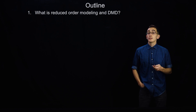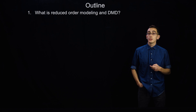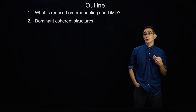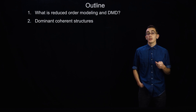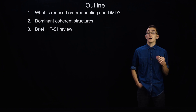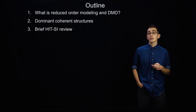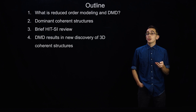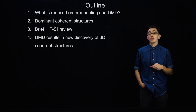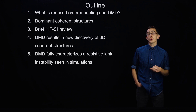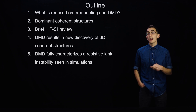Here's the outline. I'm going to discuss what reduced order modeling is and what the Dynamic Mode Decomposition is — we're going to abbreviate it as DMD. I'm going to discuss how dominant coherent structures arise in plasmas and nonlinear systems in general, give a brief HIT-SI review — HIT-SI is a spheromak experiment here at the University of Washington and the experiment with which we test our methods. Then I'm going to show you two results: first, DMD results in a new discovery of 3D coherent structures, and second, that we can fully characterize the resistive kink instability from simulations.